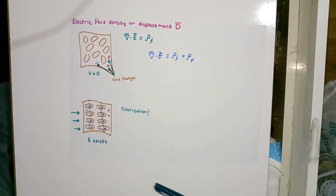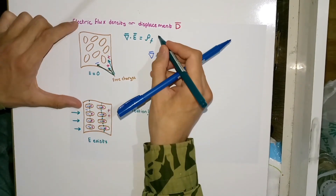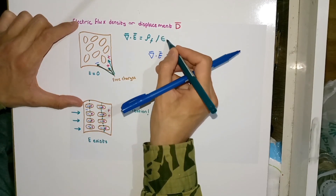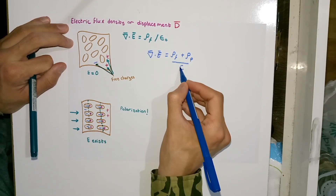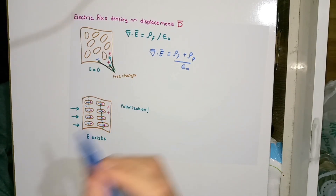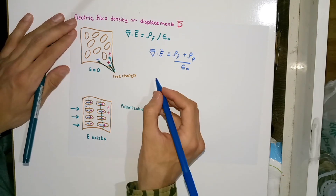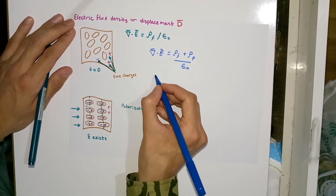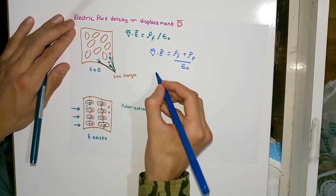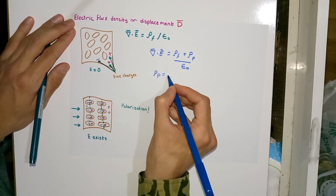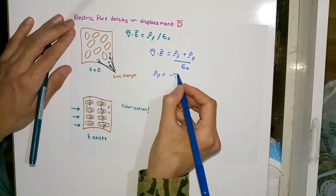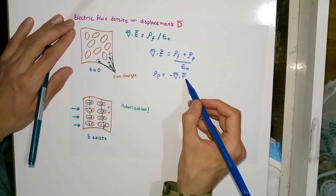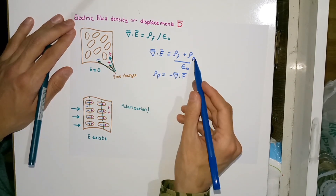I also include ε₀, the permittivity of free space. In a previous lecture we proved that the volume polarization charge density ρ_P is equal to the negative divergence of the polarization vector P. Now let's substitute the right-hand side of that result for ρ_P in this equation.